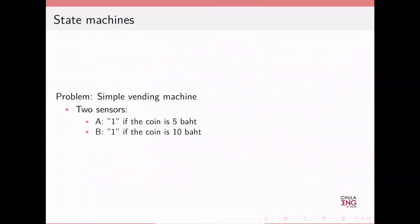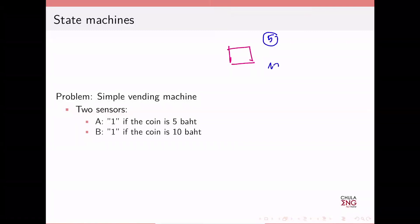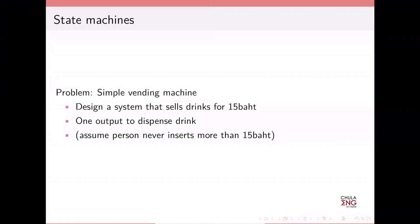Another example is the simple vending machine. If you want to implement a vending machine that accepts coins, let's say you have two coin types only: 5 baht and 10 baht. You have a state machine, a vending machine that takes in two different coin values — five and ten. We can design the machine to sell drinks for 15 baht, and the output will say: once you put in 15 baht, it dispenses the drink.